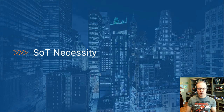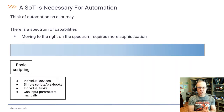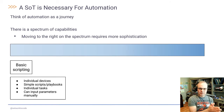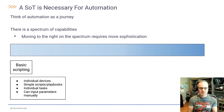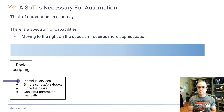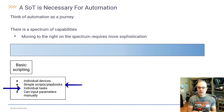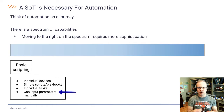The source of truth is a necessity and we're going to discuss why. Think of automation as a journey and there's a spectrum of capabilities along this journey. Moving to the right on the spectrum requires more sophistication. On the very far left side, basic scripting typically involves individual devices, simple scripts or playbooks, individual tasks, and the operator can input parameters manually into the script or playbook.